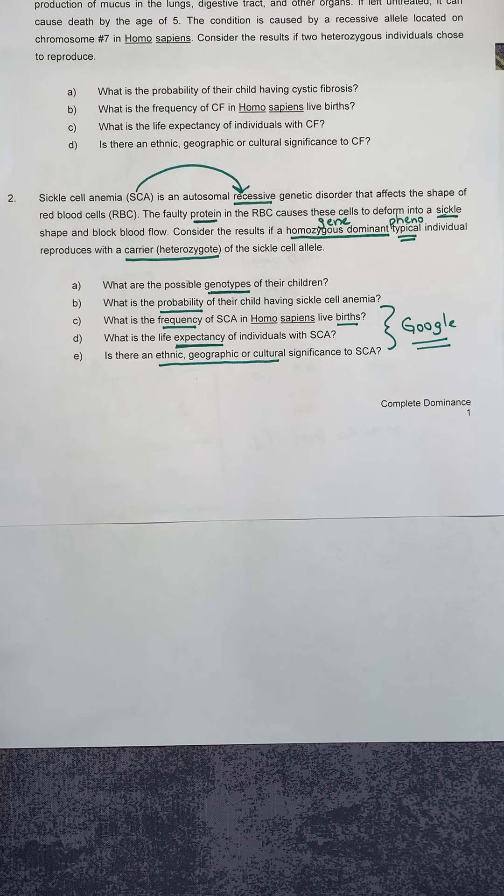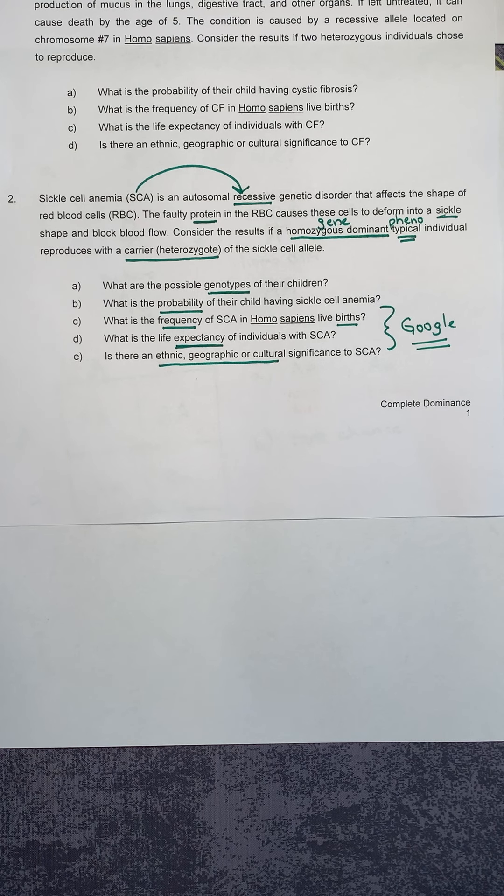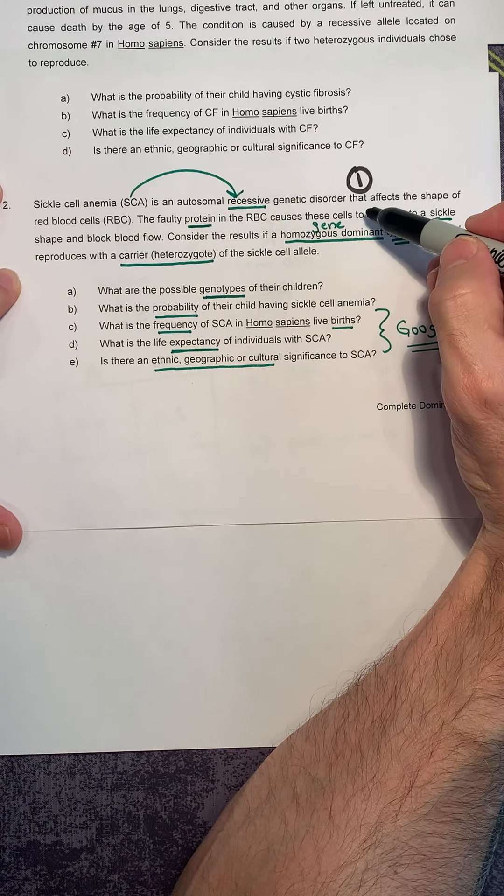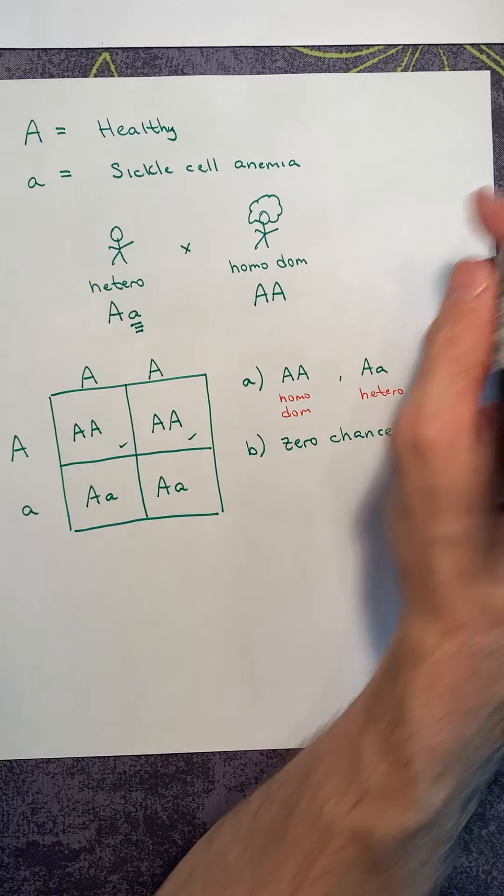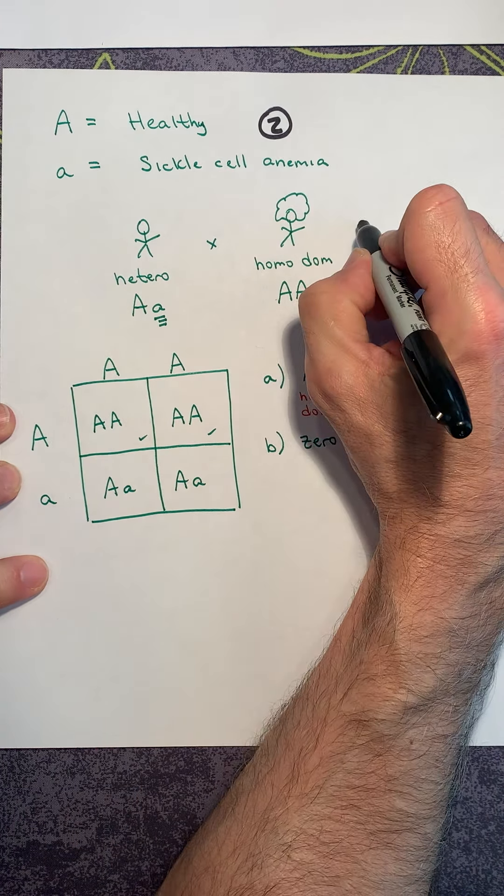So again, understand that what I'm looking for here is procedure. I want you to understand how to do these problems. I'm not going to go through and grade these and look for the right answer. That's not what this is all about. This is about procedure. So step one, read your question and dissect the question. Step two, define your alleles. What's dominant? What is recessive? Step three, produce your cross. What are your parents? Step four, draw the Punnett square. What are their children going to look like? Or what could their children look like? And then step five, answer the question. Excellent. We'll talk to you soon.